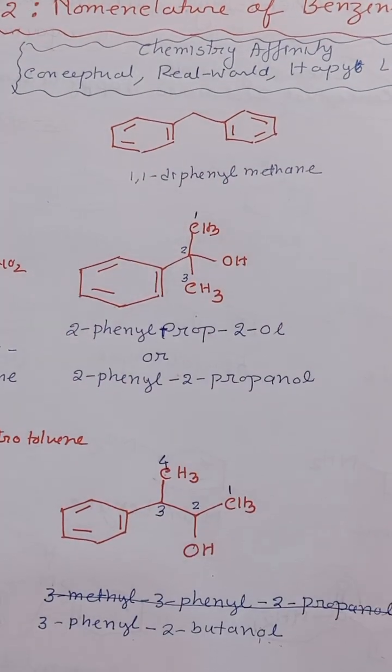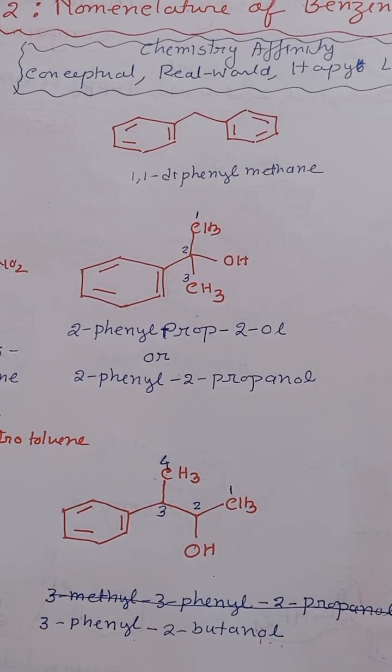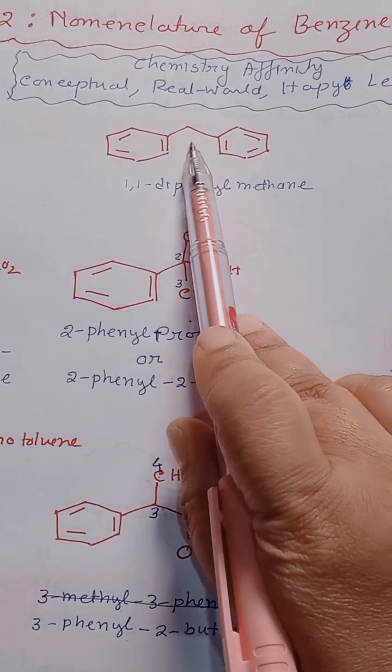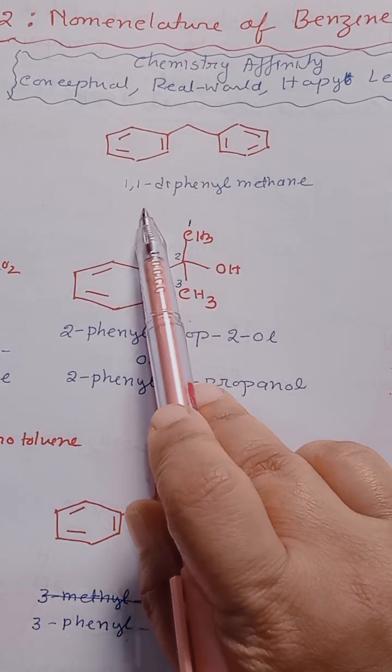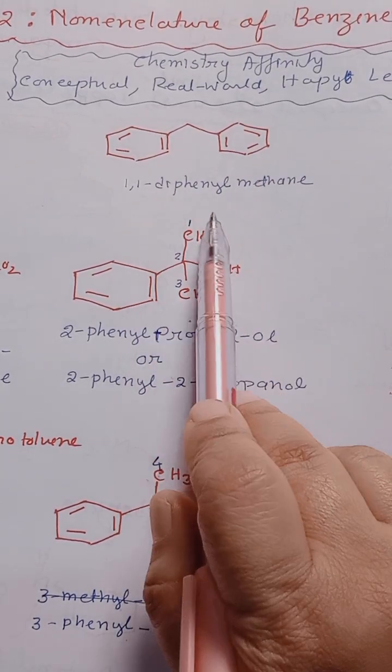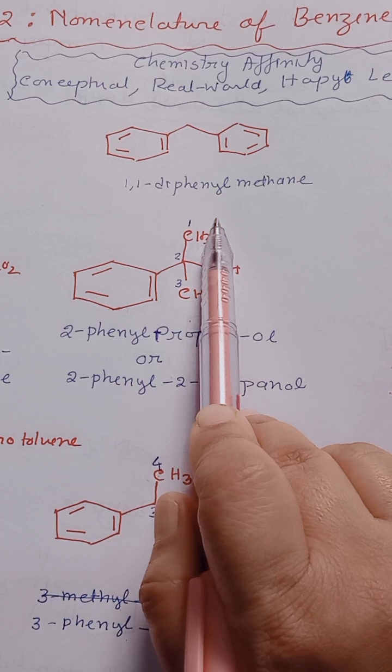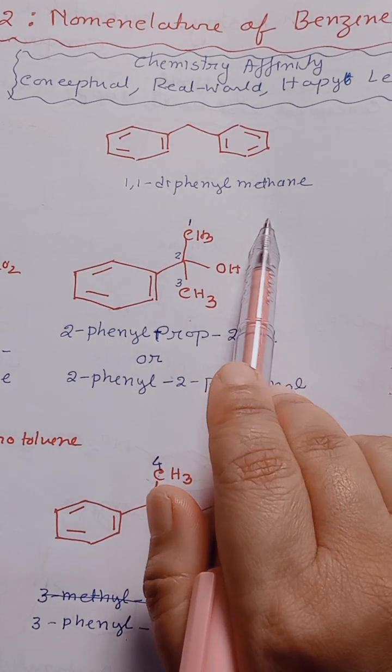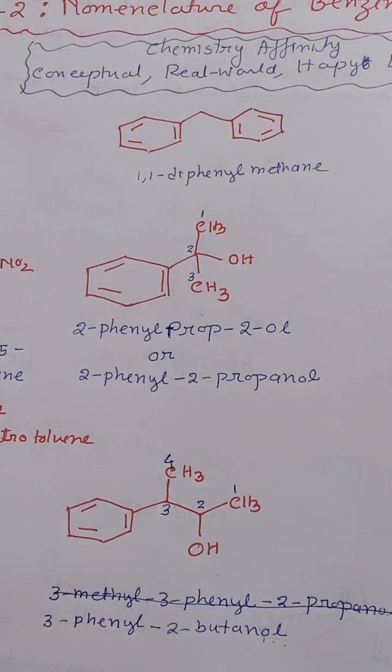First compound: here we can see there are two phenyl groups which are connected via only one carbon. So we can write diphenyl methane, or just diphenyl methane is also okay. So this is the IUPAC nomenclature.